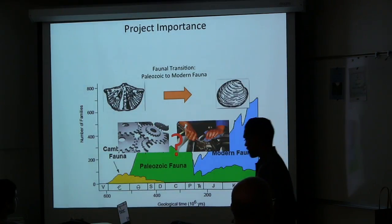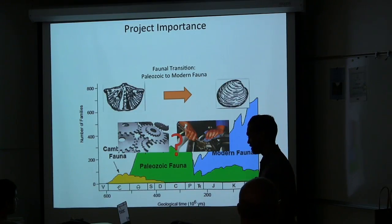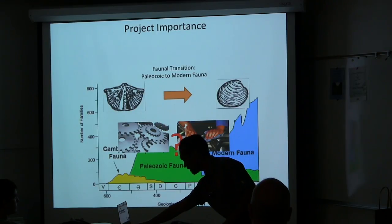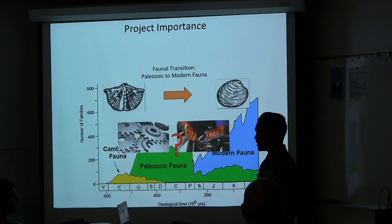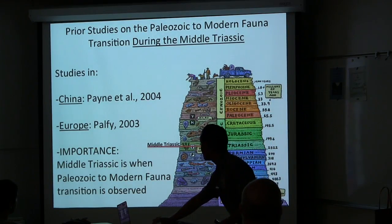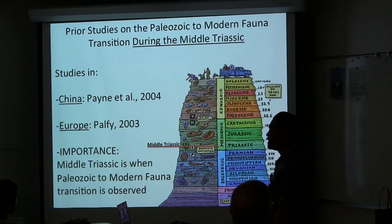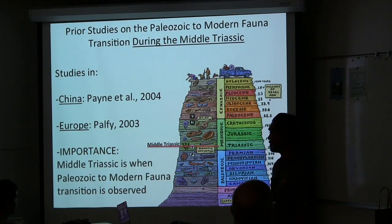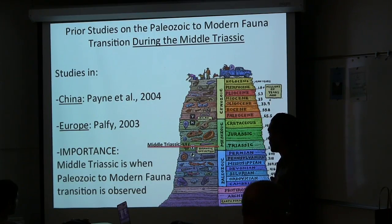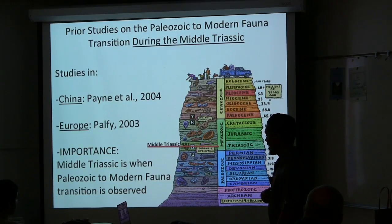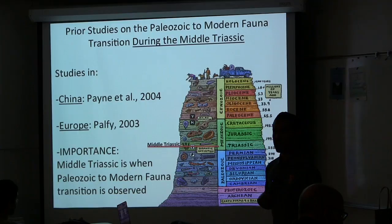This project is relevant because clarifying the Paleozoic to modern fauna transition helps understand the mechanics that drive marine life. Such studies can also be used to understand changing modern organisms. Studies from the Paleozoic to modern fauna transition during the Middle Triassic, approximately 247 to 237 million years ago, suggest that this transition happened during the Middle Triassic.